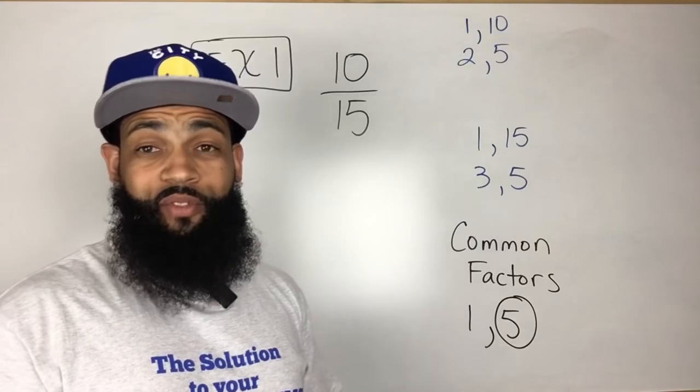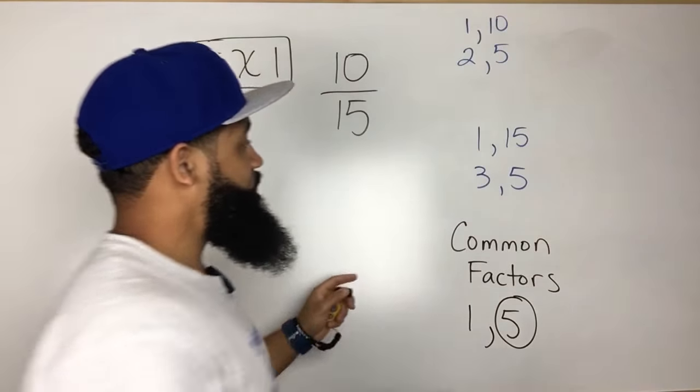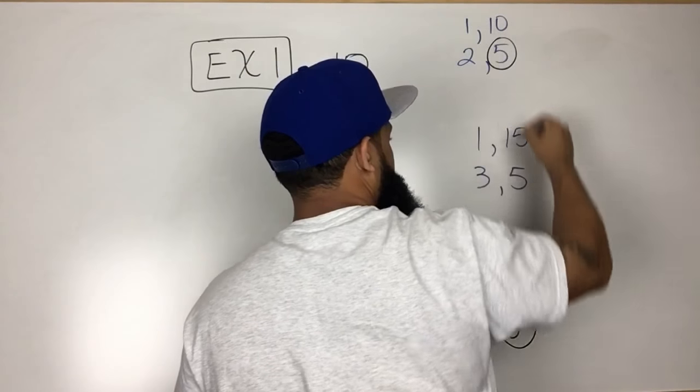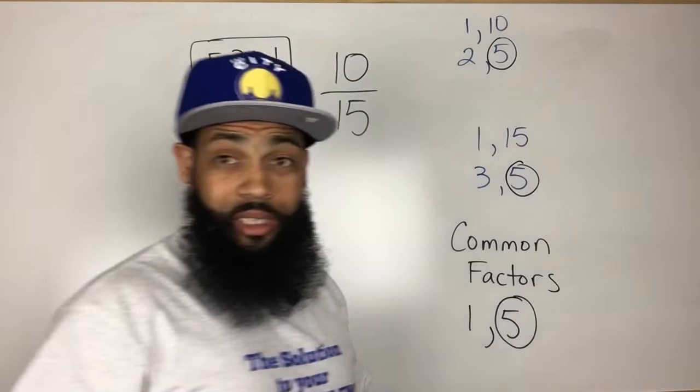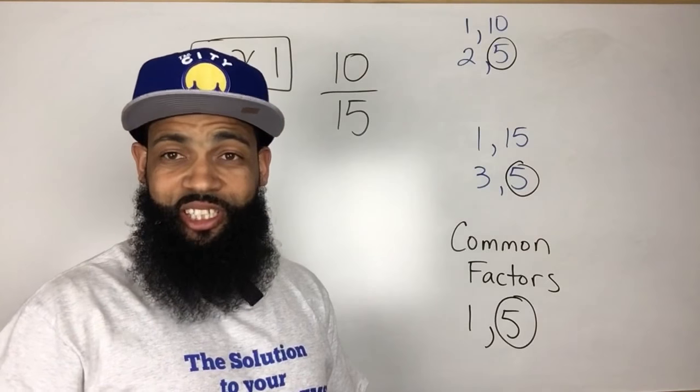So now that we have the greatest common factor of 10 and 15, and notice I'll circle it here as well, because that's the greatest common factor also known as the GCF.